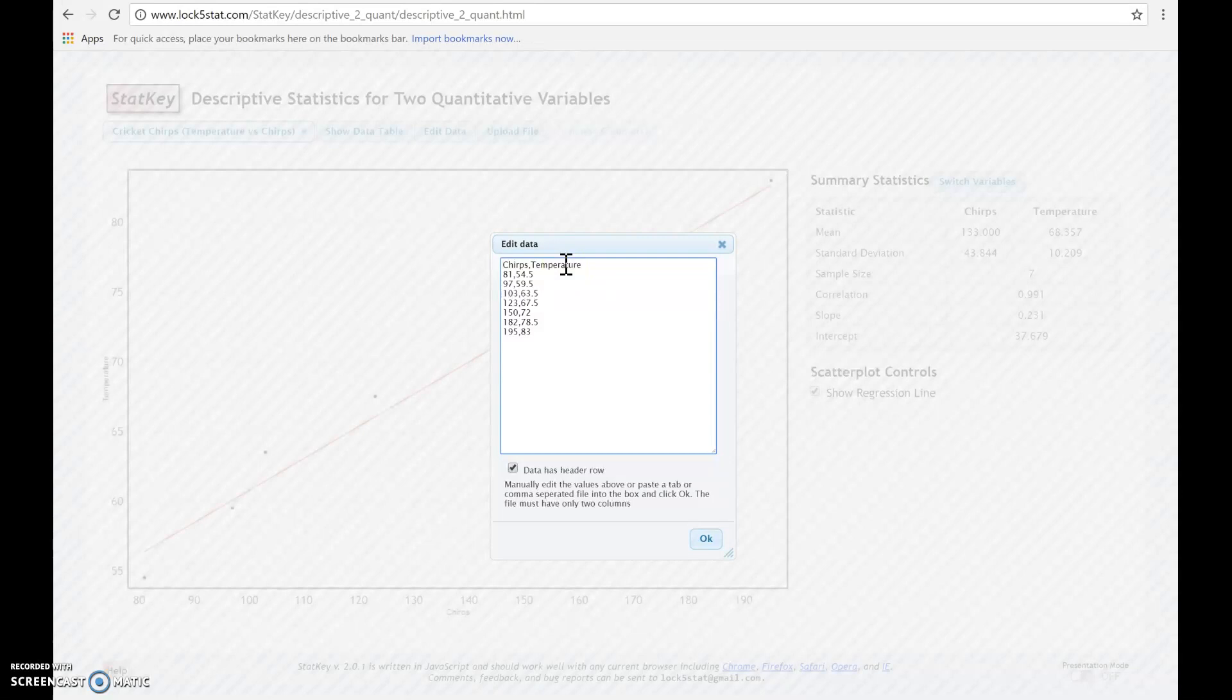The first row here is going to be what we call a header row. It's just going to identify what the two different variables are. So in this case, it was chirp and temperature, and we separate them with a comma.